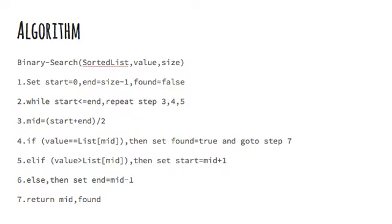At last we return the variable value of variable mid, the value of the index where we find the value, and variable found which will be true or false as per our result.